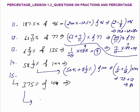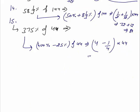The last is 375% of 44. Can I say this equals 400% minus 25% of 44? 400% means 4, minus 1/4 × 44. 4 × 44: 40 × 4 is 160 plus 16 equals 176, minus 1/4 of 44 which is 11. So the answer is 165. This kind of calculation — addition, multiplication — must be very fast.